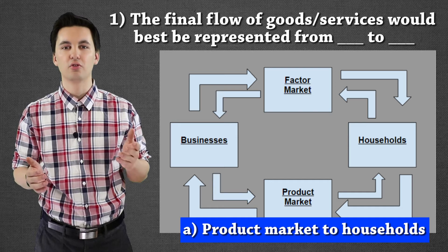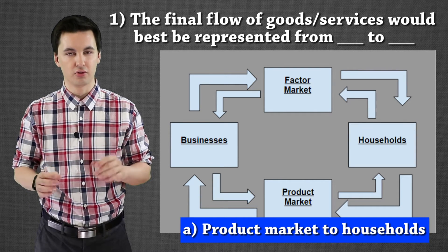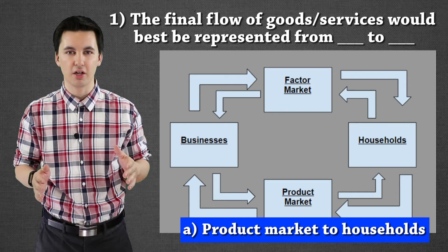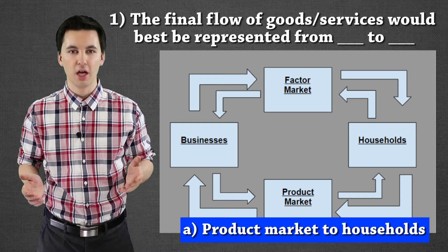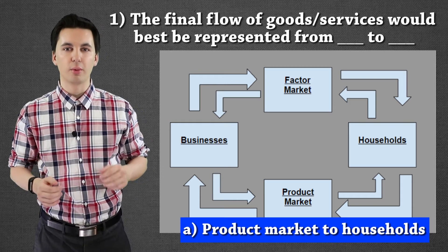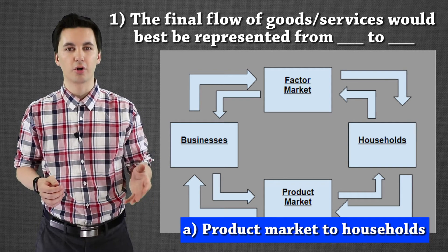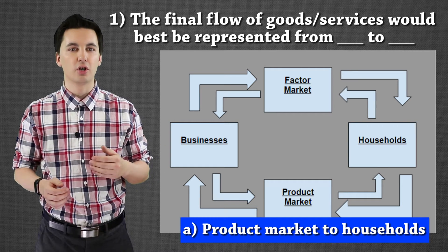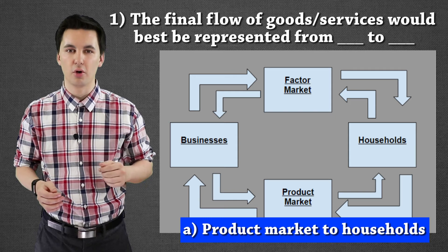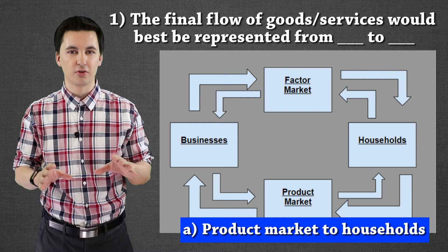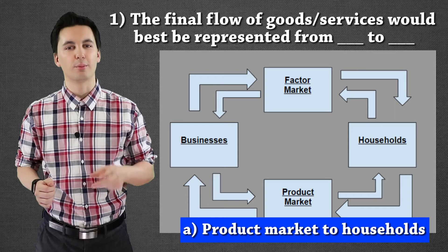Why? We're talking about final goods and services — things that are already produced and finished. Final goods and services are purchased by consumers. Our product market is where they're sold, so consumers go into the product market, purchase them, and then bring them home. Looking at the arrows, we'd be looking at between the product market going back to the household. Hopefully this first one is making sense. Let's go on to question number two.